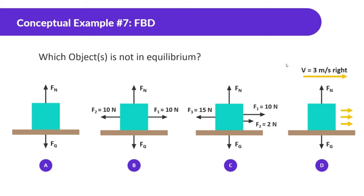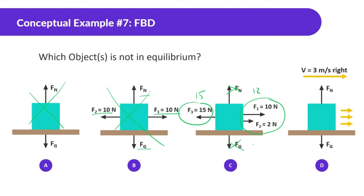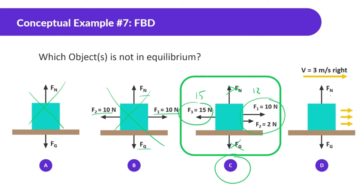Which object is not in equilibrium? It won't be A — normal force and gravity cancel each other out, net force is zero. In the next one, forces in the x direction cancel and normal force and gravity cancel. However, in diagram C, the total force on one side is 12 while the total on the other is 15, so it is not in equilibrium — there's more force going to the left, meaning it's accelerating to the left. Even though D is moving, it could be at constant velocity with acceleration of zero.